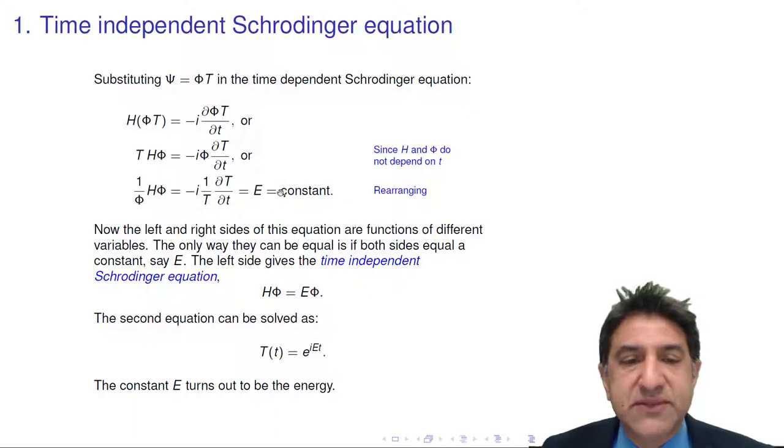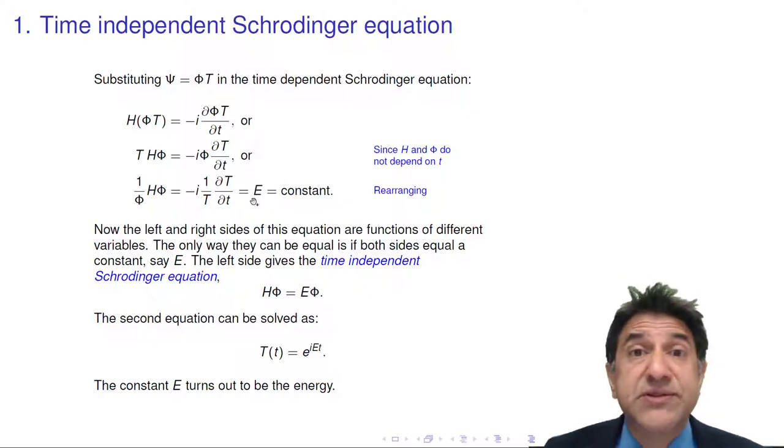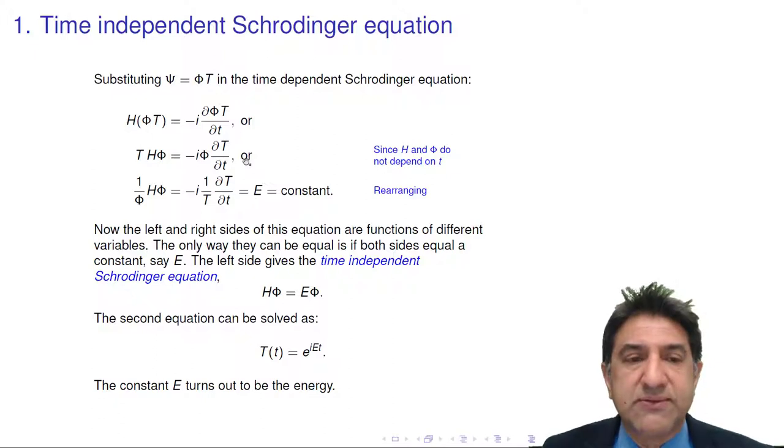So we set both sides of these equal to a constant. That's the main trick when you do separation of variables. So these equations, the original equation now splits into two equations: one which is H φ equals E φ. For this spatial part only, this is the time-independent Schrodinger equation, because now nothing in that equation depends on time, assuming H doesn't depend on time.